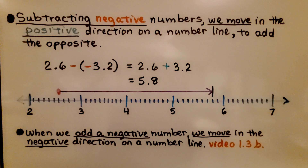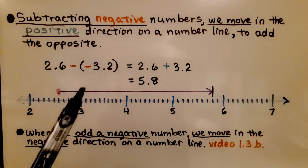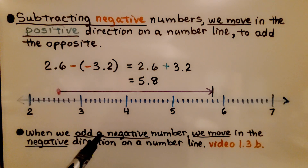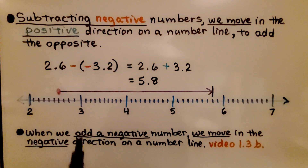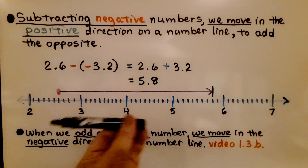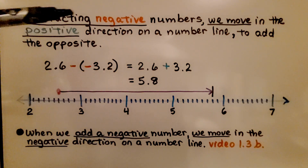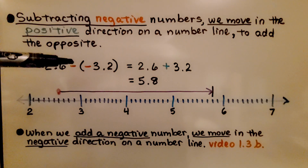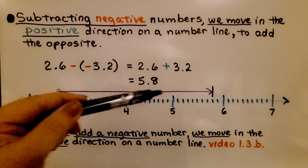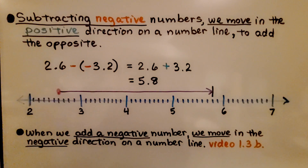When we add a negative number, we move in the negative direction on a number line. So if we were adding a negative, we would have gone to the left. But because we're subtracting a negative — we have a minus sign and a minus sign — we're going to move in the positive direction.